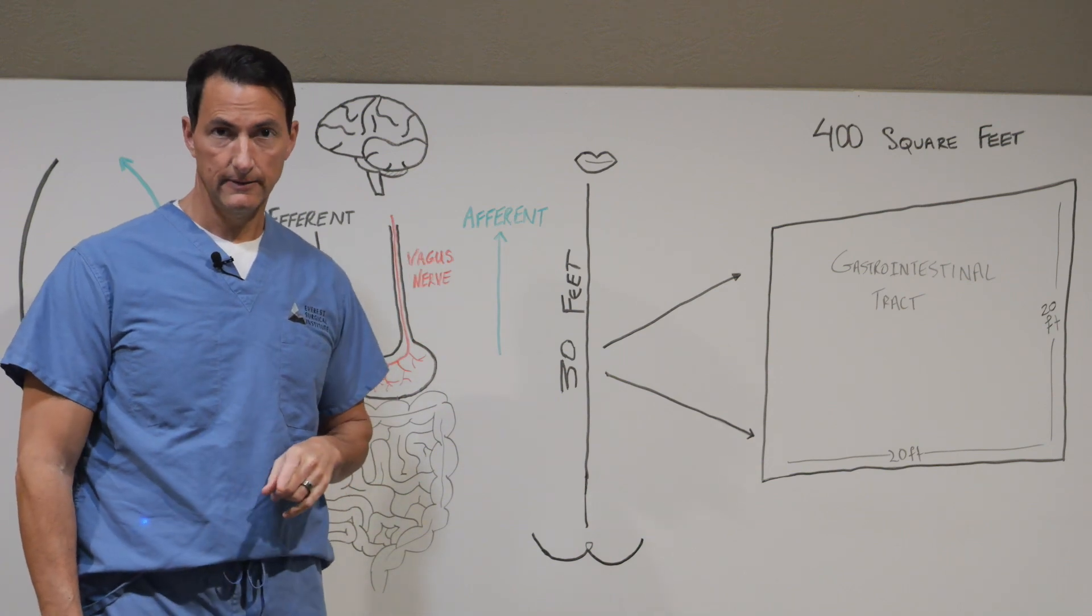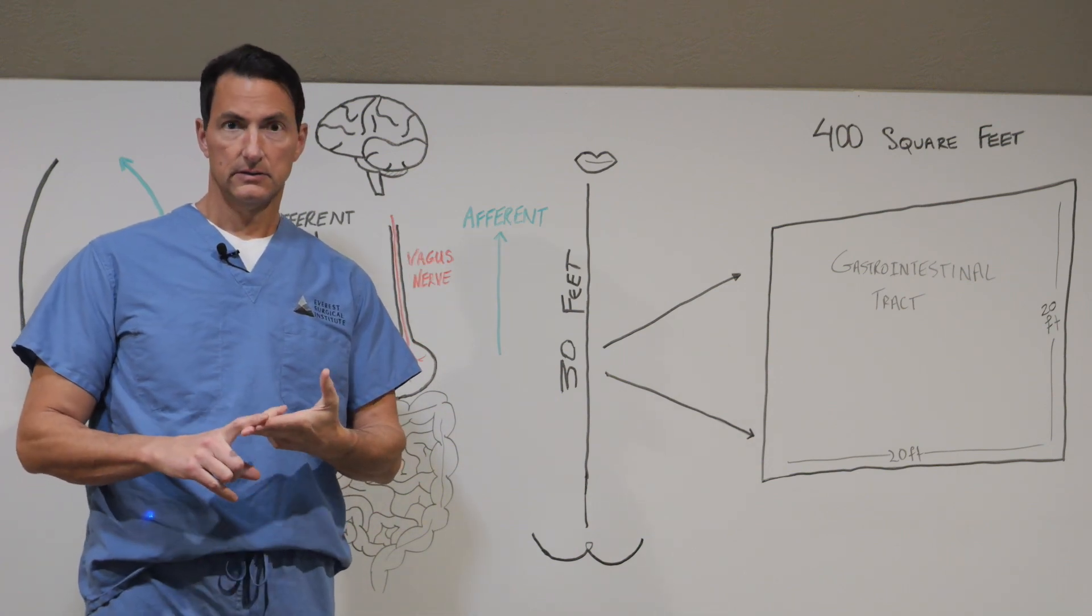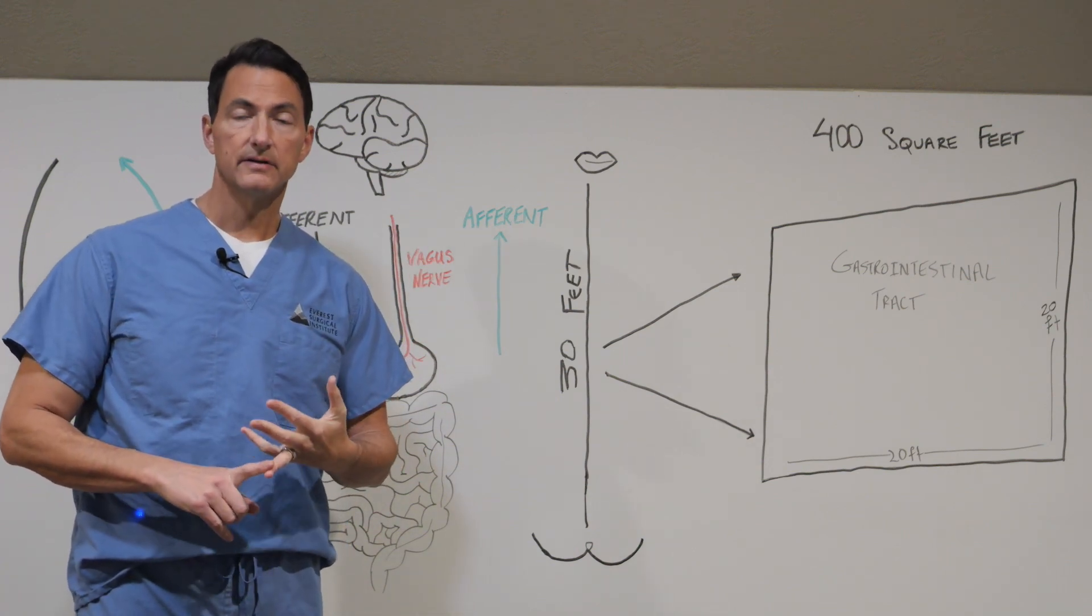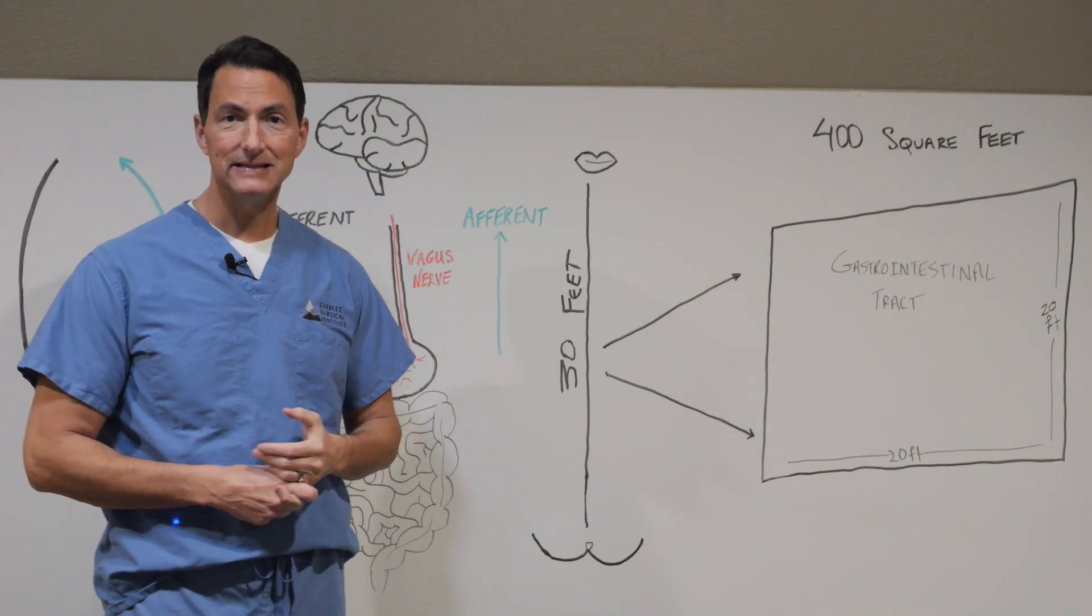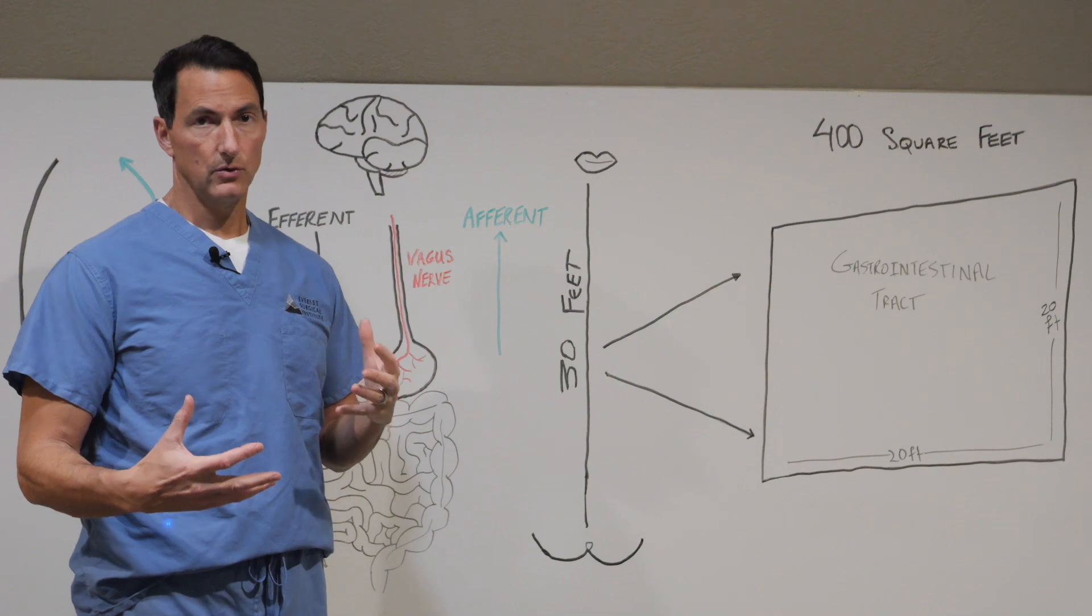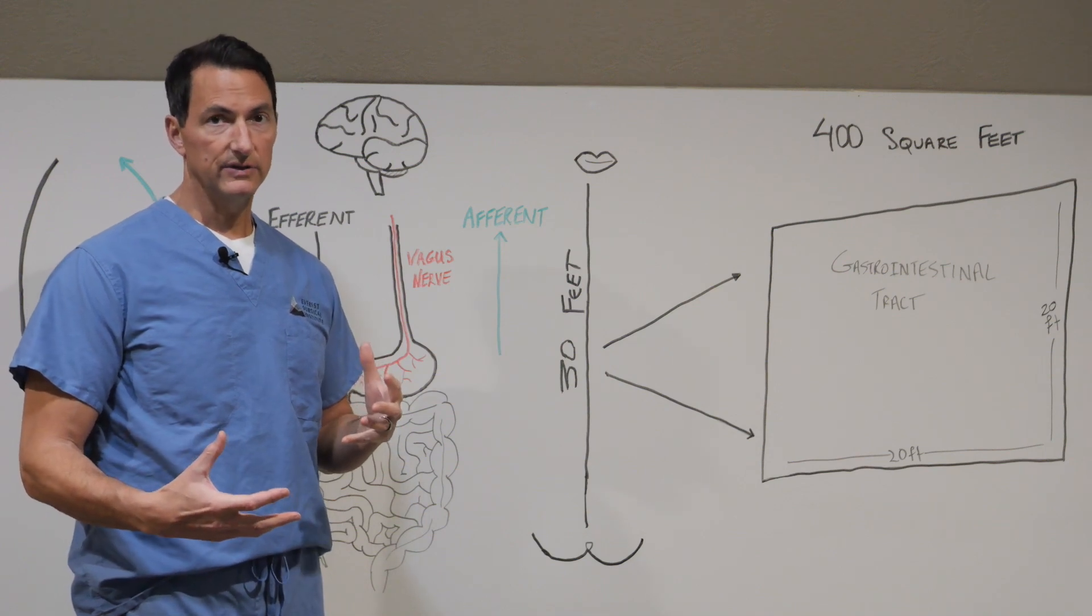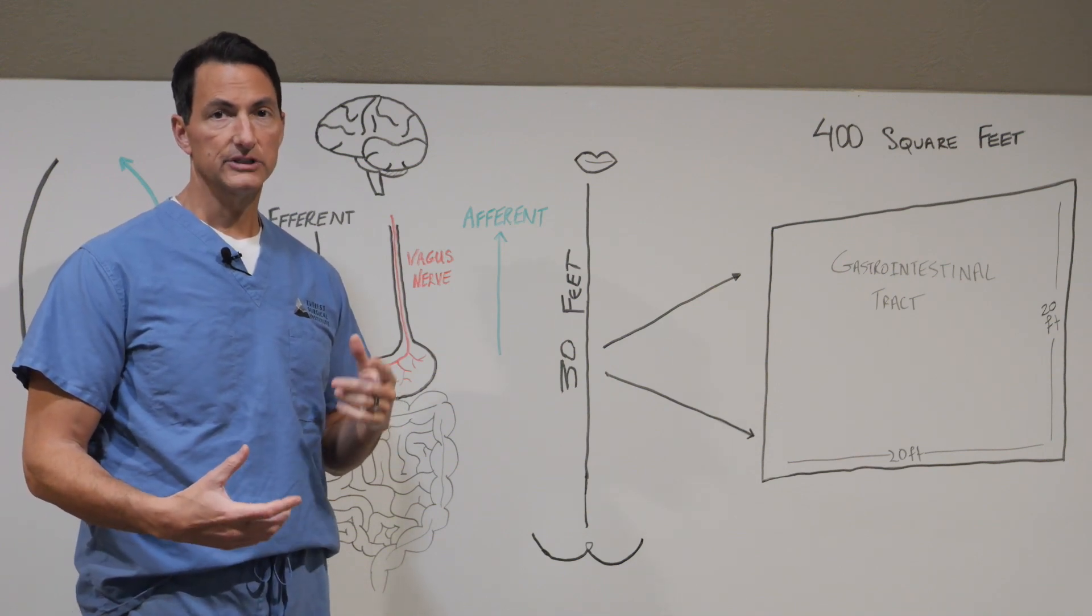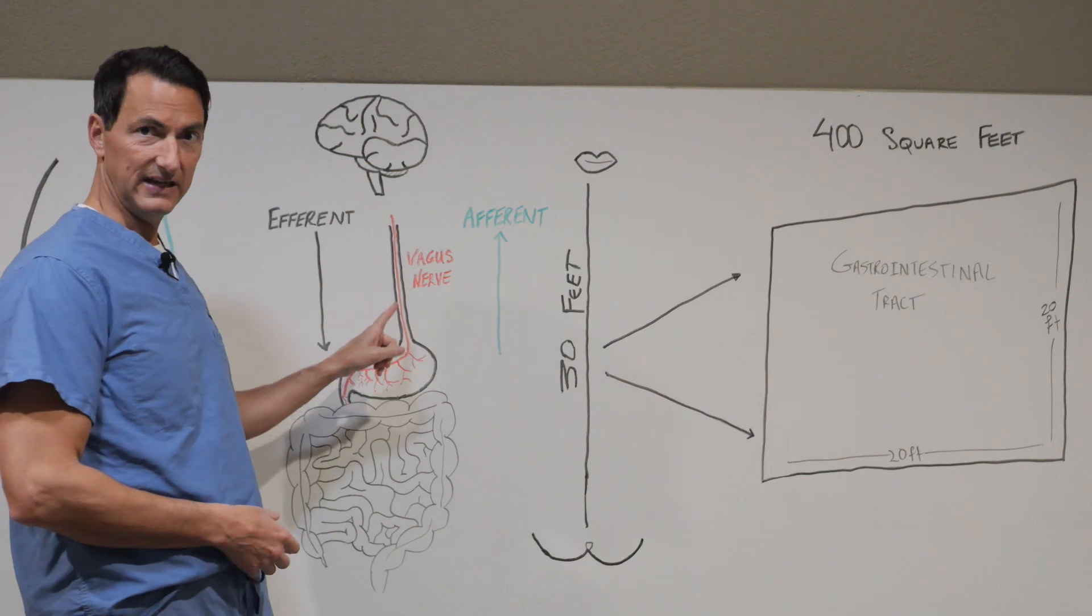Now all the organs that we consider visceral organs or viscera are innervated or communicate with the brain through the vagus nerve. These organs include the heart, the lungs, the liver, the pancreas, the kidneys, the intestinal tract. All of these viscera organs communicate with the brain primarily through a circuit that involves the vagus nerve.